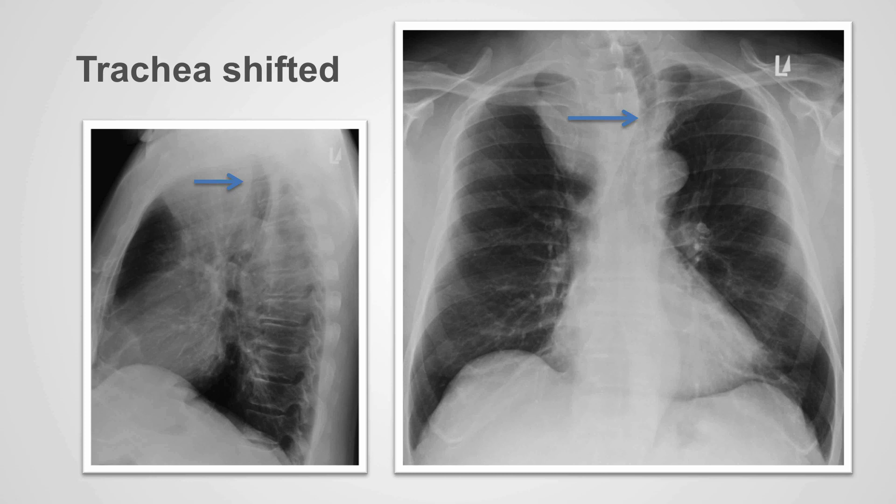Conversely, middle and posterior mediastinal masses, if large enough, will displace the trachea anteriorly.